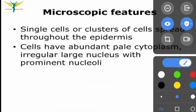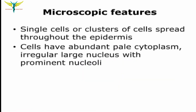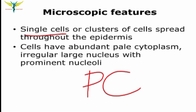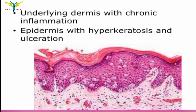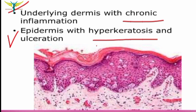In microscopy, we see cells called Paget cells — single cells or clusters spread throughout the epidermis. These cells have abundant pale cytoplasm with irregular large nuclei and prominent nucleoli. We also see the epidermis with ulceration and scales, and the underlying dermis shows chronic inflammation, with the epidermis exhibiting hyperkeratosis and ulceration.